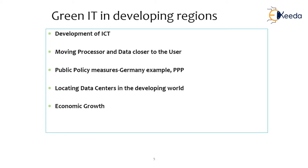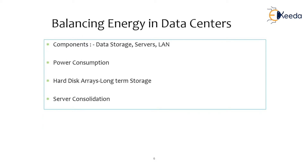There is a need for balancing energy in the data center. A data center consists of different kinds of resources such as data storage, servers, and LAN, all of which require power to operate. There is definitely high power consumption for each and every resource within the data center. There is also a kind of server consolidation. Because of the energies consumed within a data center, it emits a high CO2 level.